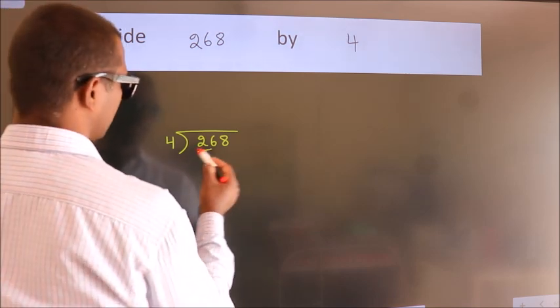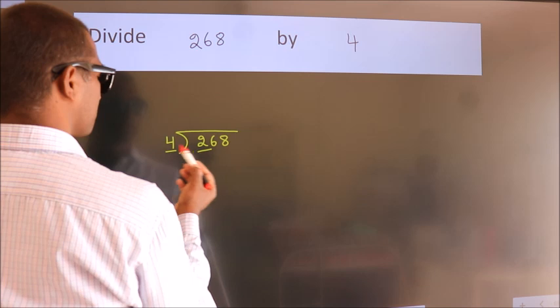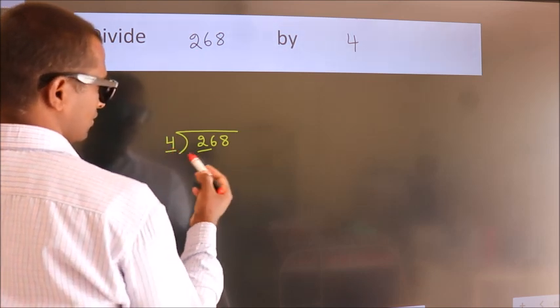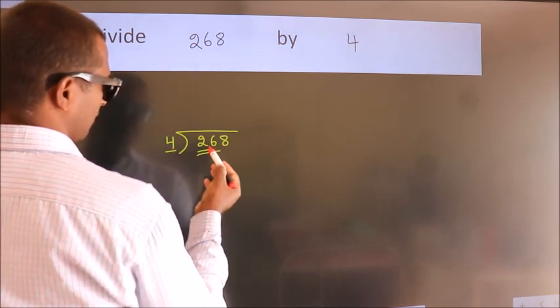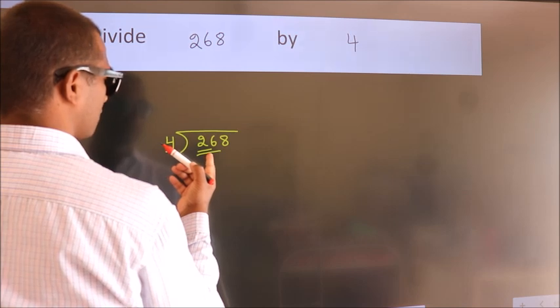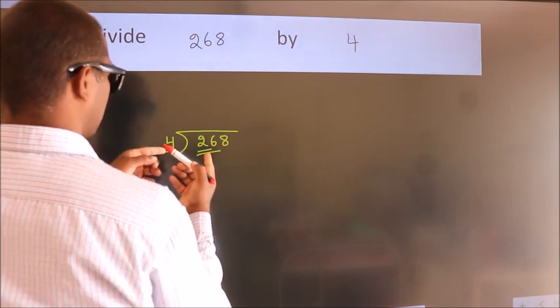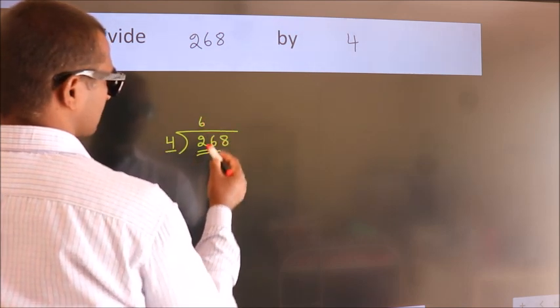Here we have 2. Here 4. 2 is smaller than 4, so we should take 2 numbers: 26. A number close to 26 in the 4 table is 4 times 6, 24.